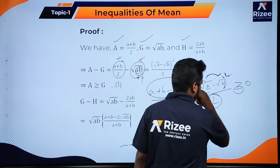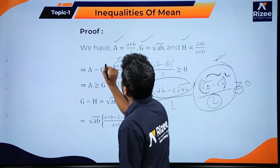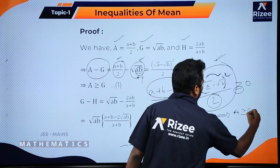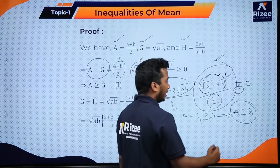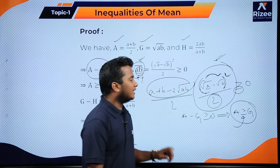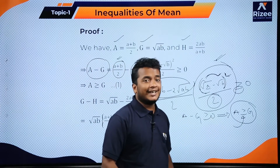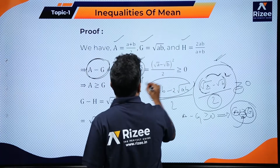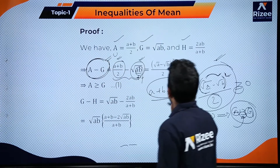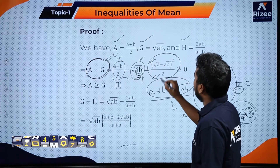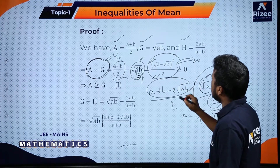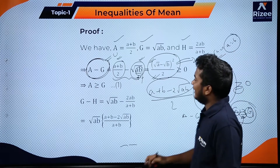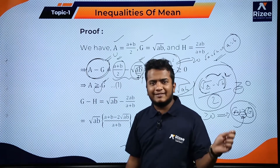So A − G ≥ 0, which means AM ≥ GM. The equality sign holds when A = G, meaning (√a − √b)² = 0, which gives √a = √b, i.e., a = b. So AM equals GM if and only if a equals b.